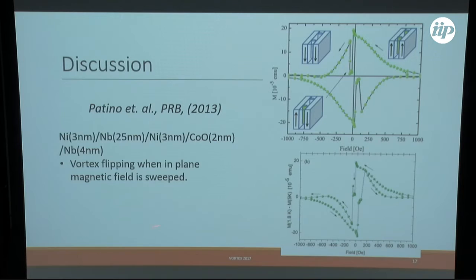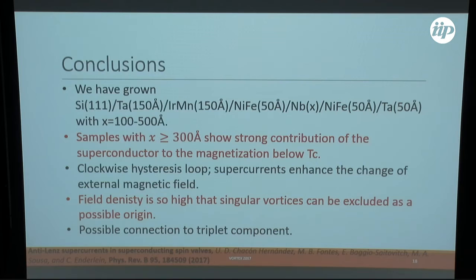I talked a bit quicker than I actually wanted; I'm already at the conclusions. But I think that it might be not too bad because people here seem to be quite tired. To summarize, we have grown these spin valves with superconducting interlayer, and the samples above or with 300 angstrom or above show this strong contribution in the superconducting phase of the niobium layer. They all show this clockwise hysteresis loop, which is very puzzling, which means that the supercurrent enhances the change of the external magnetic field. We could show that the field density is so high that singular vortices can be excluded as a possible origin, and there might be a possible connection to the triplet component. Thank you for your attention.